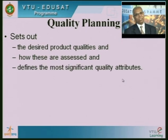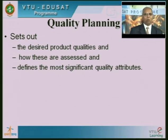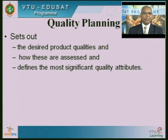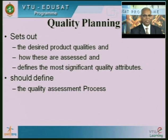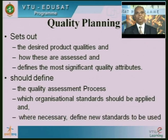Quality planning defines the most significant quality attributes. We cannot define all quality attributes, and all of them cannot be quantified — for example, 'software should be easy to maintain' is very difficult to measure. So we try to define at least the most important quality attributes and then define methods to assess whether the software meets those quality standards. The quality assessment process and organization standards to be applied — along with any new standards needed for the specific project — are all part of quality planning.